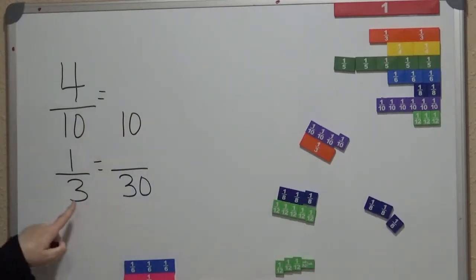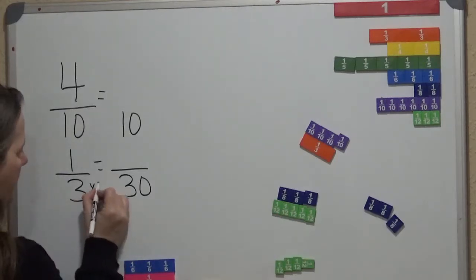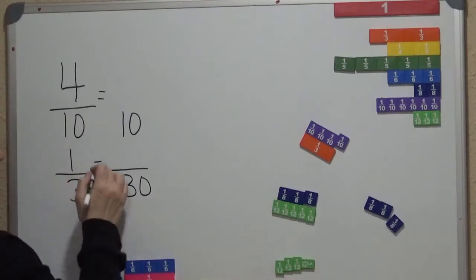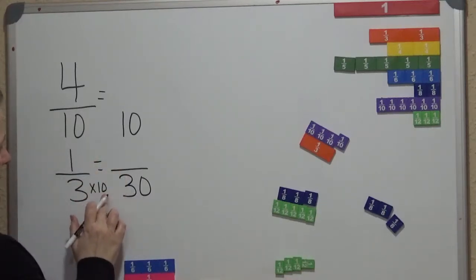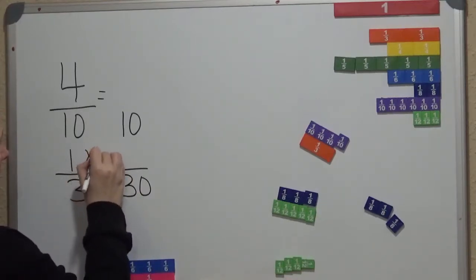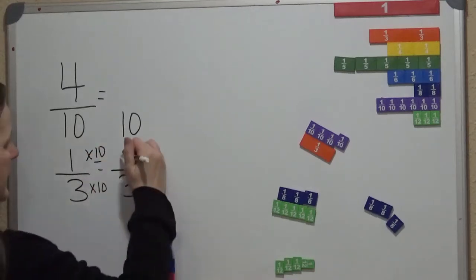So then we would look at this and see. So, we know that 30 divided by 3, or what is it that we would have to do to get from 3 to 30? We would have to multiply by 10. So whatever we do to the bottom, we have to do to the top. So 3 times 10 gives us 30. 1 times 10 gives us 10.